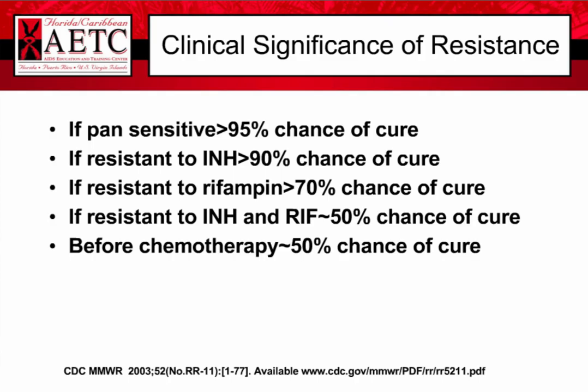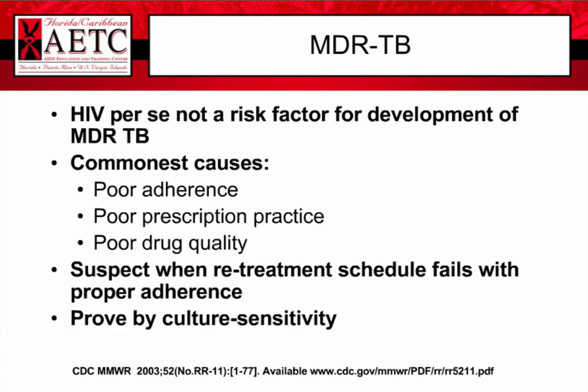Before chemotherapy, the chance of cure was about 15% — meaning someone with a good immune system who was not immunosuppressed could get tuberculosis and recover on their own about 15% of the time. This is why we sometimes see incidental granulomas on chest X-rays in patients who never knew they had tuberculosis and were never treated — they likely had TB and recovered without treatment.